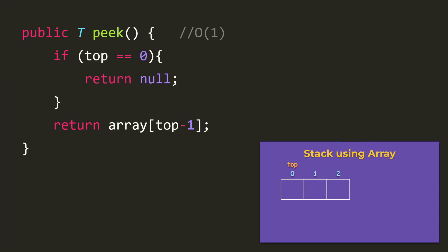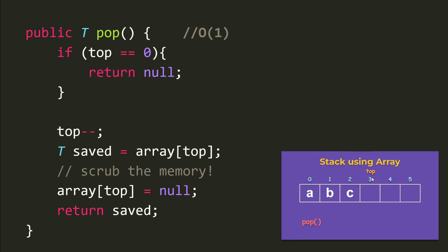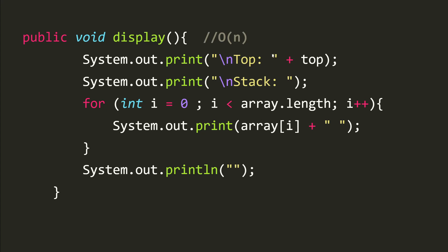For peek: if the stack is empty it returns null; otherwise it returns array[top - 1]. For pop: if the stack is empty return null; otherwise decrement top, save the element at the new top position into a variable called save, set that slot to null to empty it, and return the saved value. Display prints the top value and then loops through the array printing each element.